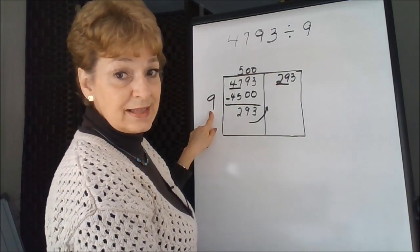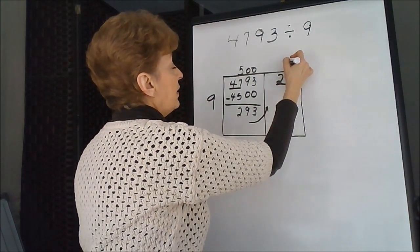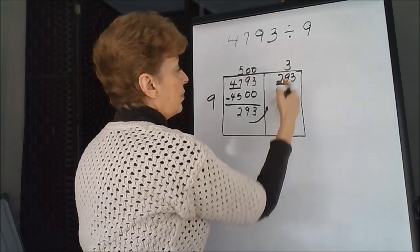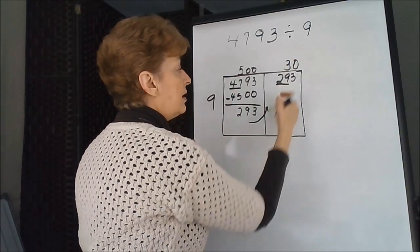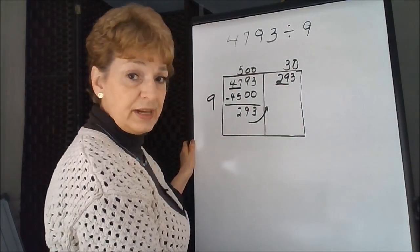Well, 9 times 3 is 27, so let's put a 3 up here. But we're in the tens place, so we have to put a zero here to show that it's really 30 times.